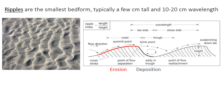Ripples are a very common type of bedform in unidirectional flow. They're quite small — on the order of a few centimeters tall — and they have wavelengths or spacing of around 10 or 20 centimeters. In cross-section, as you see on the right, they have a very gentle upstream slope called the stoss side, and a fairly steep slope on the downstream face called the lee side. If you look at a ripple from above, its crest can be fairly straight, somewhat sinuous or wavy, or it can curve into a little arc shape, as the picture on the left shows.